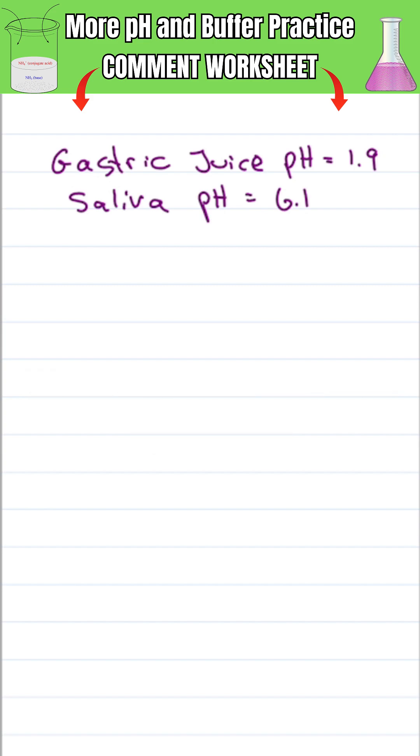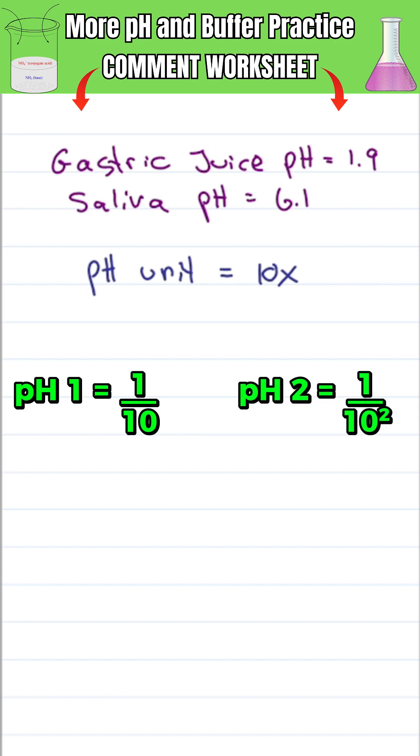If you recognize that every pH unit represents a factor of 10—pH of 1 is 1 over 10, pH of 2 is 1 over 10 squared or 1 over 100, and so on—you simply look at the difference between them.